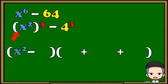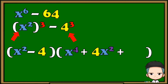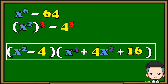Copy the base of the first term, then the base of the second term. Next, square the base of the first term — the square of x² is x⁴. Then multiply the base of the first term and the base of the second term: x² times 4 is 4x². Lastly, square the base of the second term: 4 squared is 16. Our final answer is (x² − 4)(x⁴ + 4x² + 16).